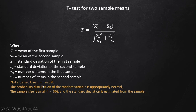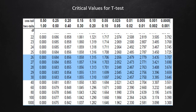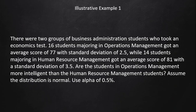We use the t-test when there is normal distribution, the sample size is less than 30 (small), and the standard deviation comes from the sample. We will still be using the same table for critical values as used in the previous video for the t-test for one sample mean.